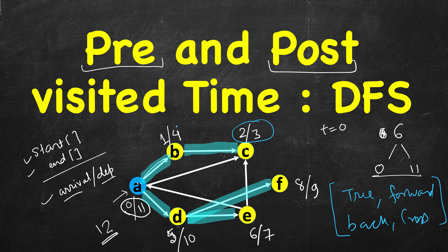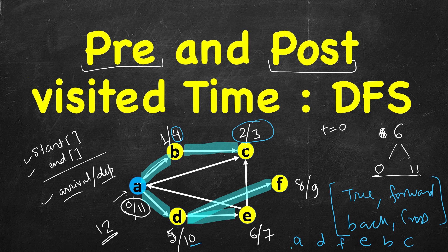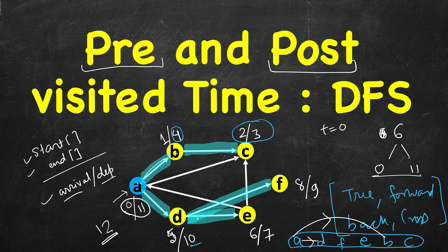Another use is topological sort. Just look at the departure times and sort them in descending order: maximum is A, then D, then F, then E, then B and C. You will see this is a topological order and all edges go in left-to-right direction. For example, A to B, A to D, D to E — you can verify all edges go from left to right when sorted in descending order of departure times.